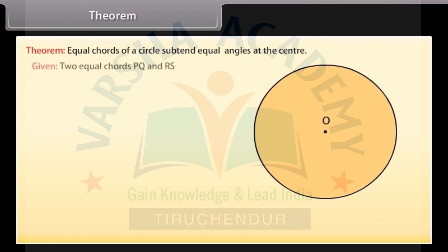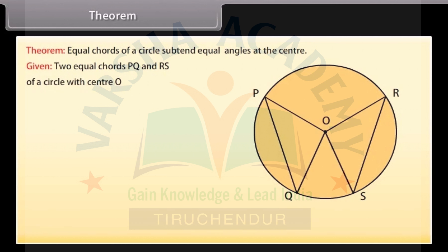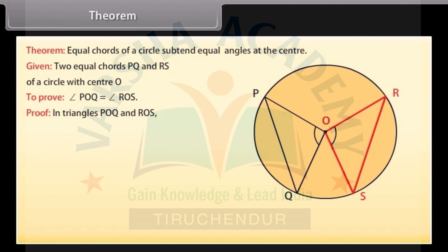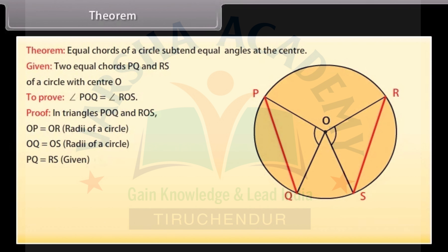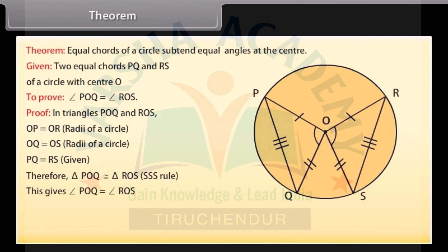This gives us the theorem: equal chords of a circle subtend equal angles at the center. Proof: Given two equal chords PQ and RS of a circle with center O. To prove: angle POQ is equal to angle ROS. In triangles POQ and ROS, OP is equal to OR (radii of the circle), OQ is equal to OS (also radii), and PQ is equal to RS (given). Therefore, by SSS congruence rule, triangle POQ is congruent to triangle ROS. This gives angle POQ is equal to angle ROS, by CPCT.